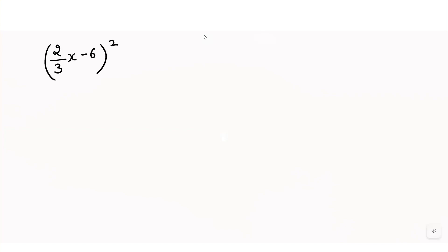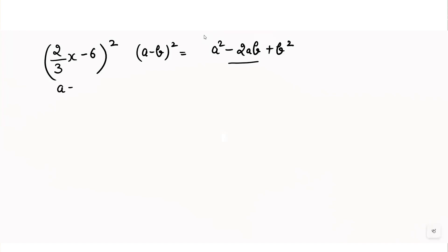Now we will use the identity (a minus b) whole square, which equals a squared minus 2ab plus b squared. The only difference from the previous identity is that here we have minus 2ab instead of plus 2ab.